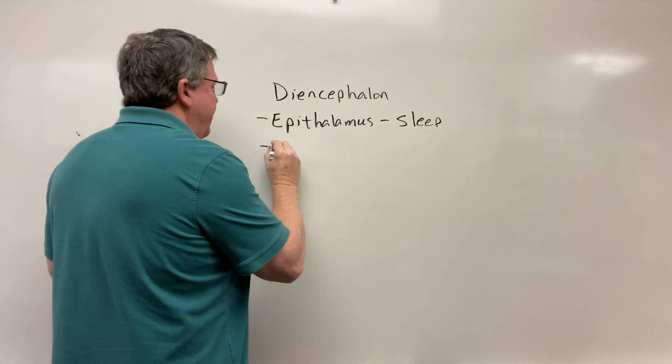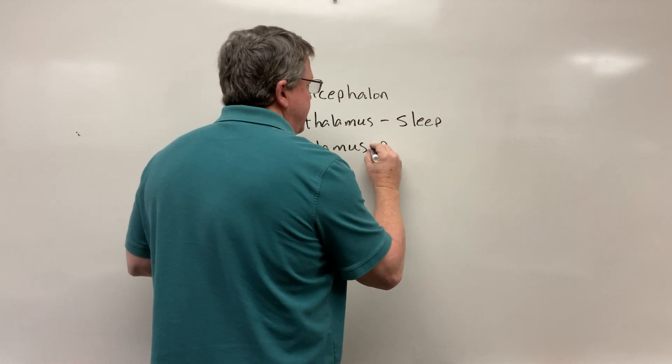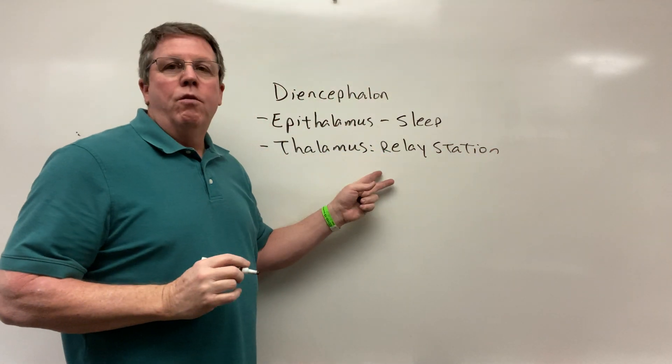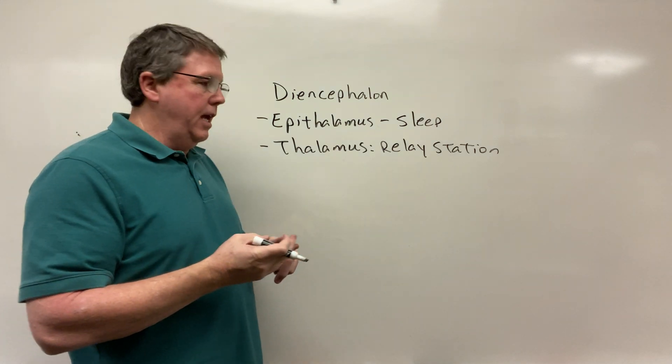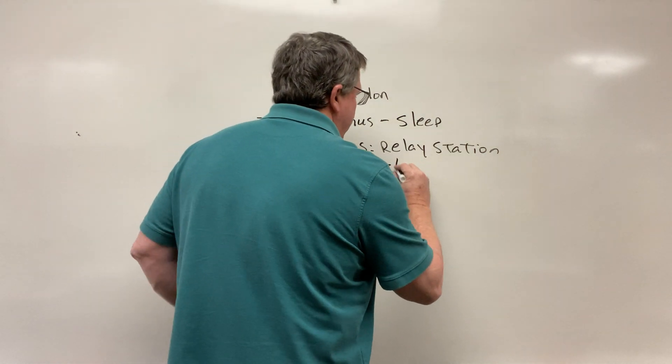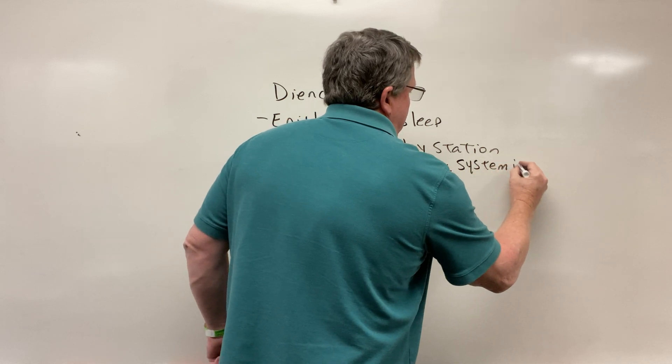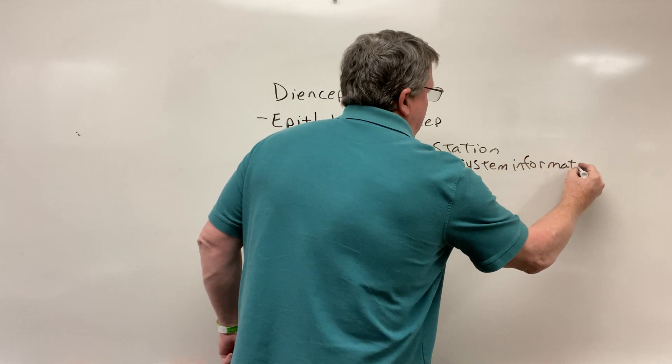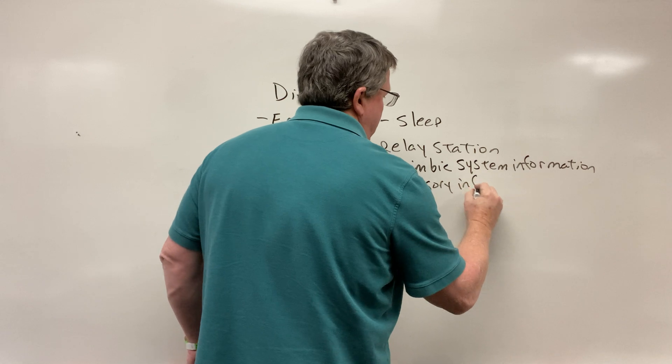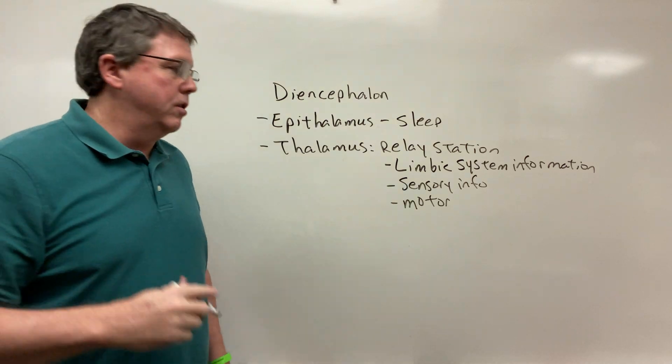You have the thalamus and the thalamus is a relay station. It's responsible for relaying sensory, motor, and limbic information between the cerebral cortex and the body. It's responsible for limbic system information, sensory information, and motor information coming from the cerebral cortex down to the body.